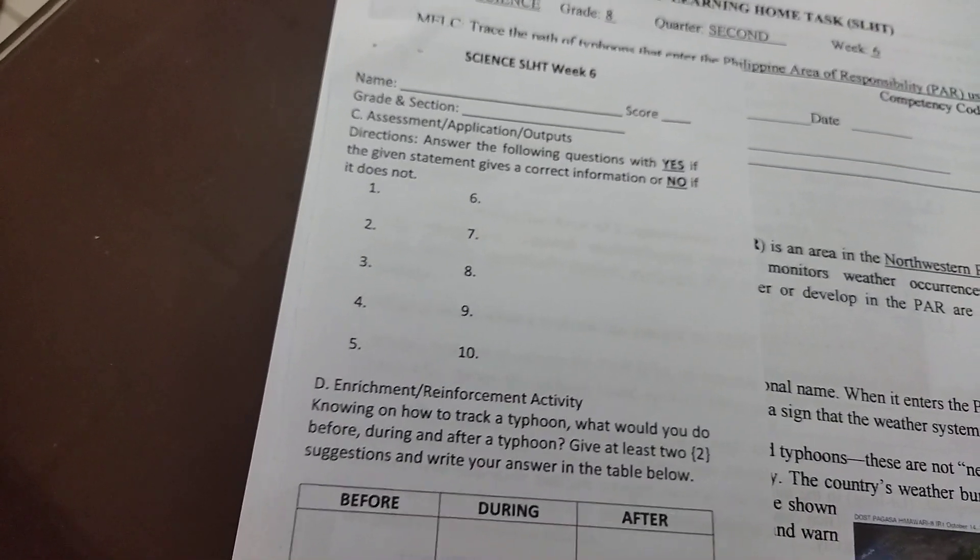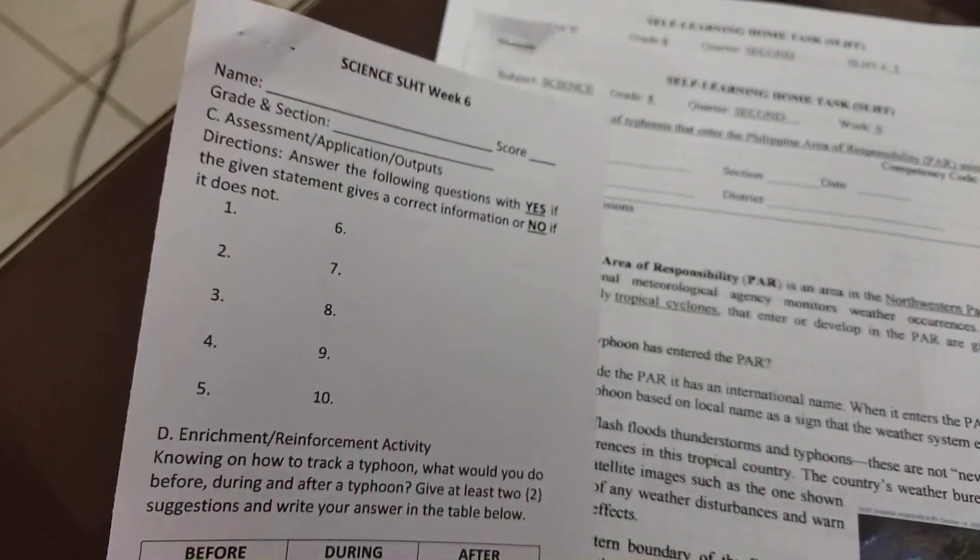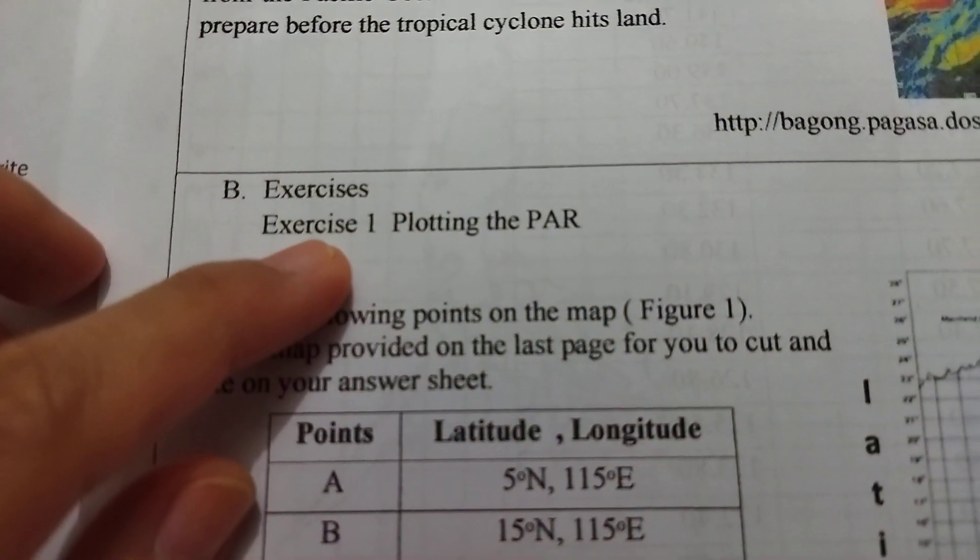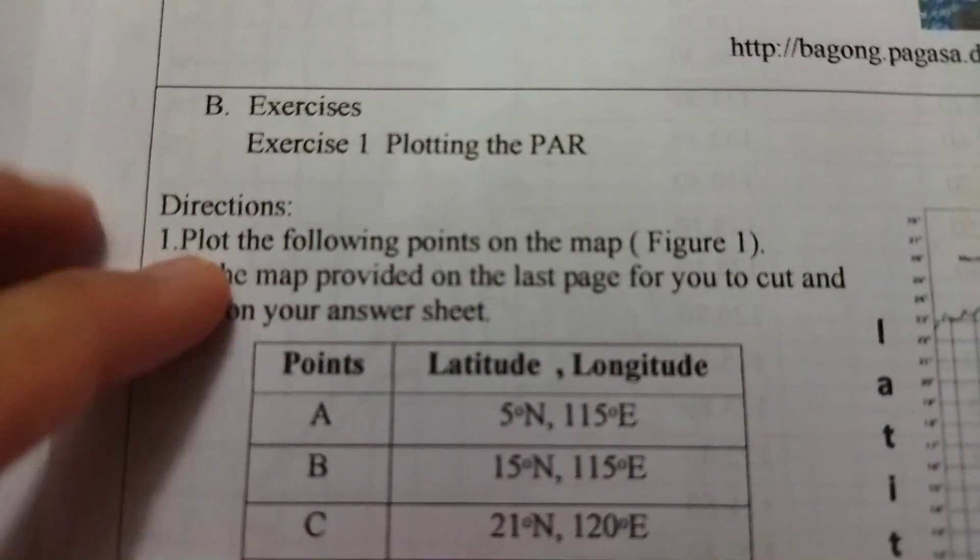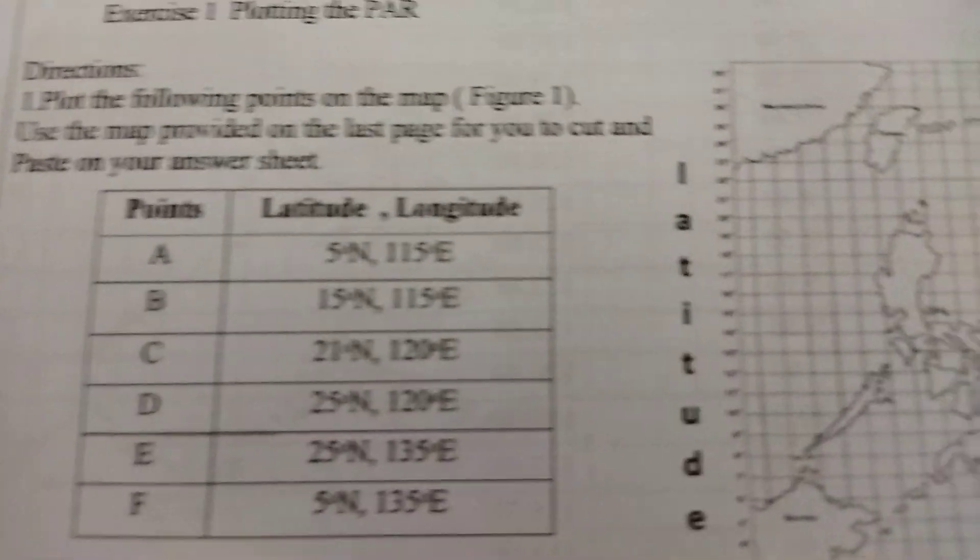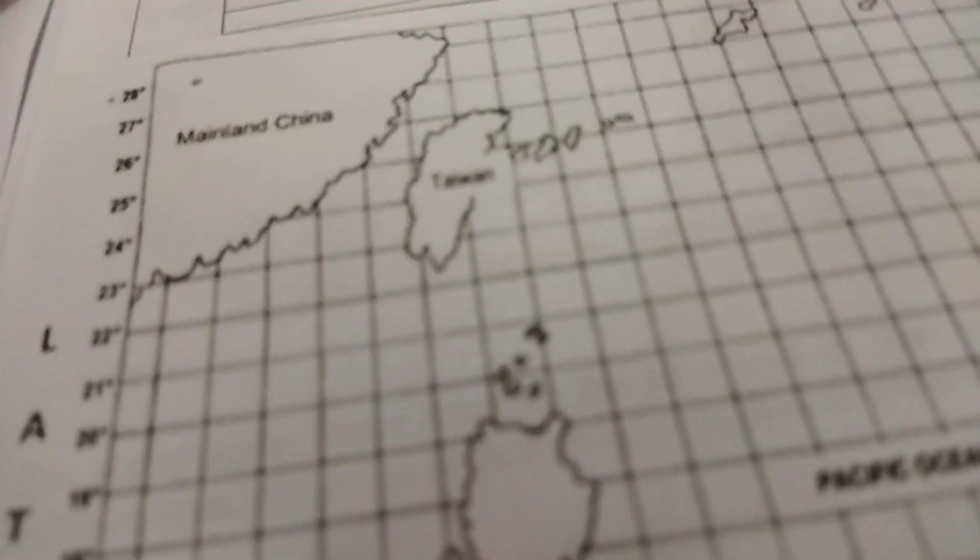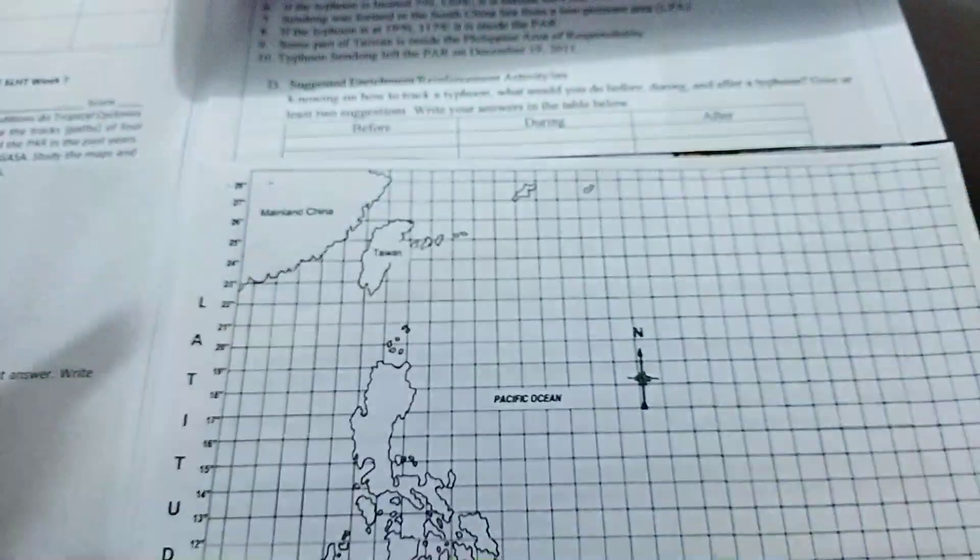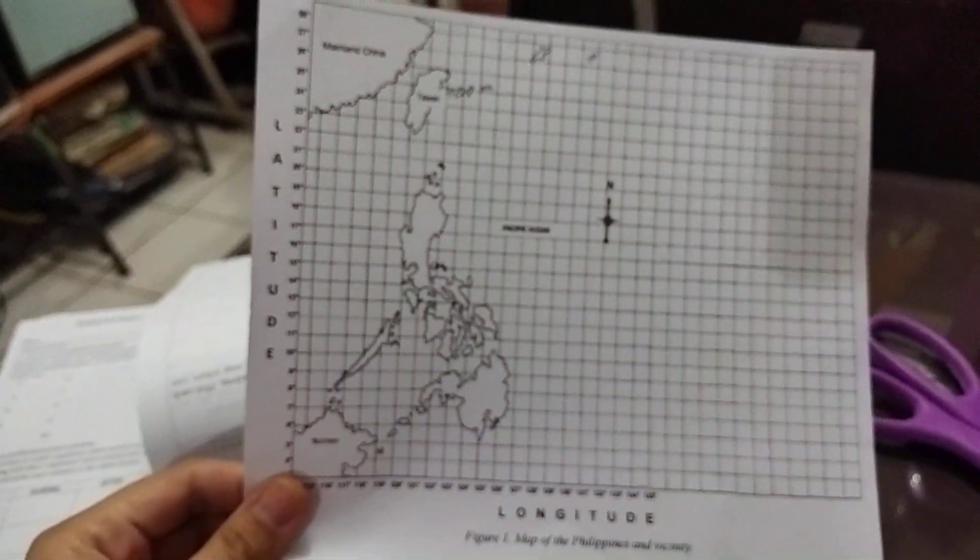And then at the bottom, we have answer sheet for SLHT number 7. This is where you are going to write your answer, and this is where you are going to staple your exercise number 1. In plotting the points, we are going to use the map at the back. You are going to cut it. You are going to cut this part here nicely and get this map and attach it to your answer sheet.